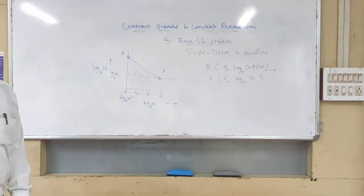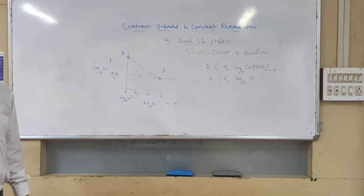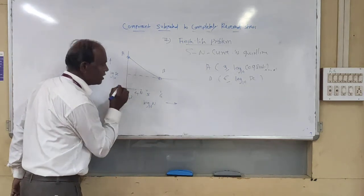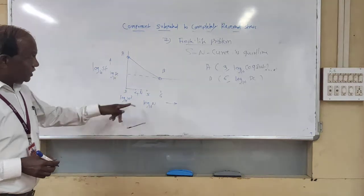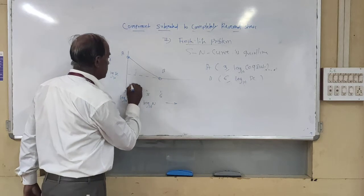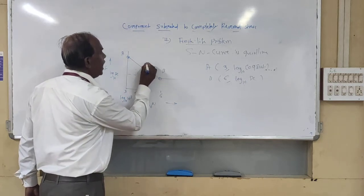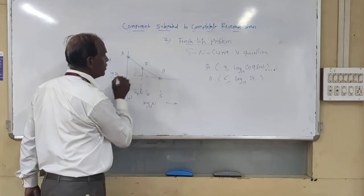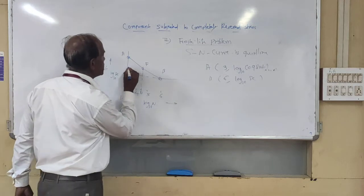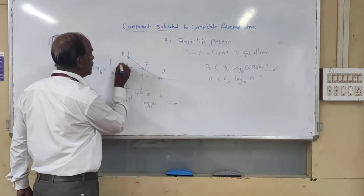For a particular component, we have to determine the life of the component. So we draw a vertical line down to the x-axis and take that value as N. We draw a vertical line from N intersecting line AB at point F.